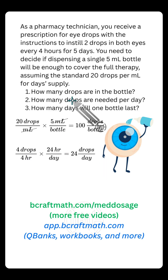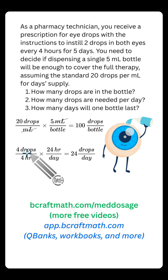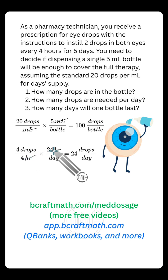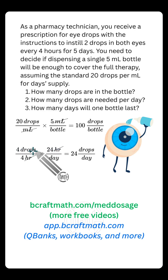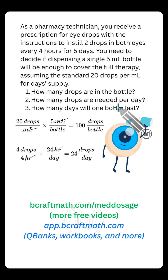For dimensional analysis, the goal is drops per day. Start with drops — they use four drops every four hours, because it's two drops in both eyes. We need to get rid of hours to get day at the bottom, and there are 24 hours in a day. Writing the fraction in this order cancels out hours. What we have left is drops at the top and day at the bottom — drops per day. Multiply the top numbers and divide by four and you get 24. You can also just cancel out those fours, and there's 24 right there. 24 drops per day.